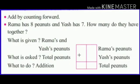Add by counting forward. Let's see in this example. Rama has 8 peanuts and Yash has 7. How many do they have together? Children, what is given? Rama has 8 peanuts. What is asked? Total peanuts. What to do here, children? Addition.